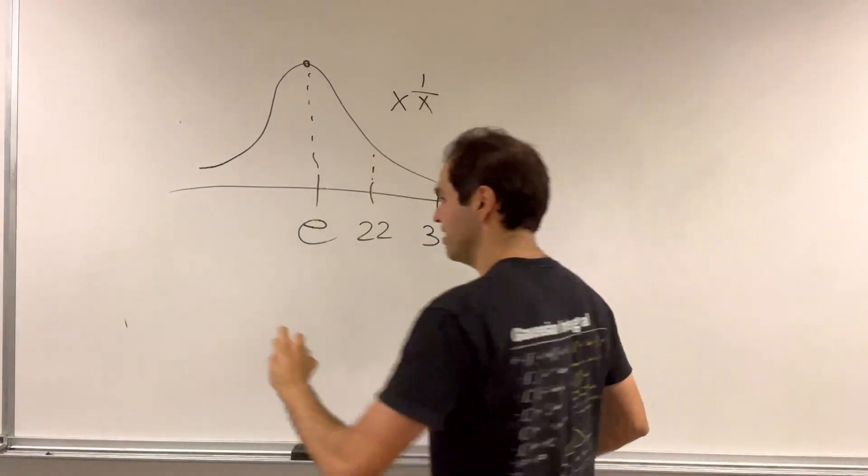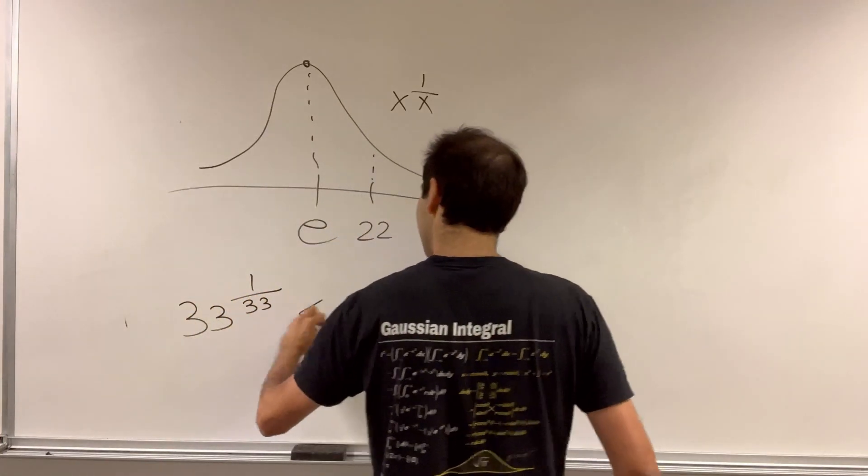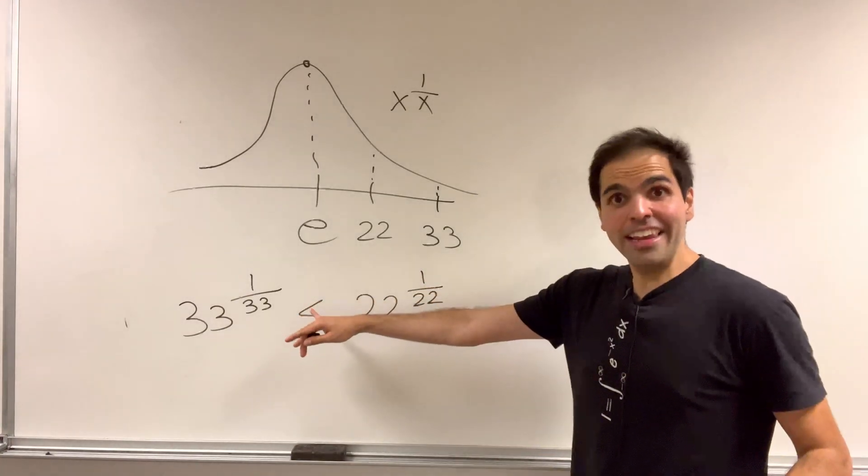What this tells us is that 33 to the 1 over 33 is less than 22 to the 1 over 22.